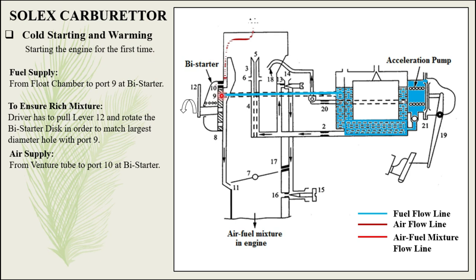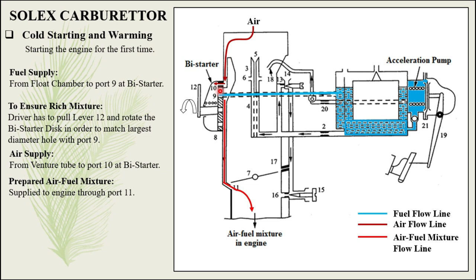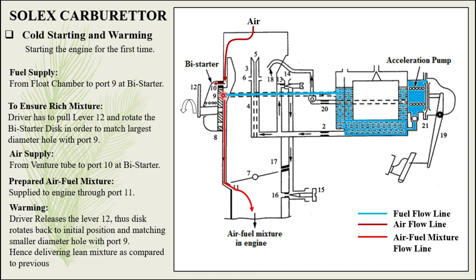Air comes through the choke tube to port number 10 at the bias starter, where the air and fuel get mixed homogeneously. The prepared air-fuel mixture is supplied through port number 11, which is located below the throttle valve. This means even though you are not accelerating the vehicle, the engine will receive a certain amount of fuel which starts the engine. Cold starting requires a richer mixture, at least 5 to 10 times richer than normal running conditions. That's why the driver pulls lever 12, rotates the plate, and brings the largest diameter hole in contact with port number 9 to supply the richest mixture.